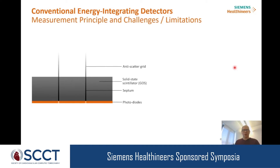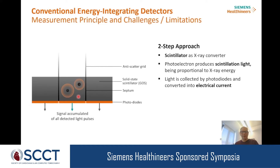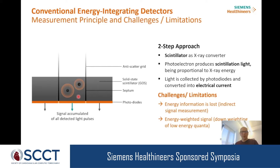In a conventional detector, it's a two-step approach: X-rays interact with the scintillator material, converting energy into visible light, which a photodiode then measures, accumulating the signal to provide an electrical current proportional to incoming signal intensity. This technique has two main challenges: the energy information is lost because we're only measuring a secondary process, and the energy weighting is unfortunate — high energy quanta contribute more to the signal than low energy quanta, which are the ones actually carrying the diagnostic information.